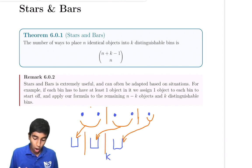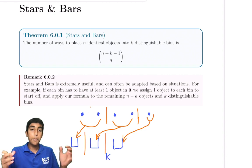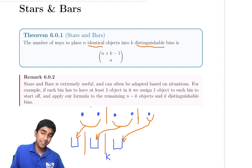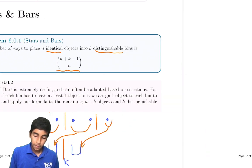Make sure to remember that the objects must be identical, and the bins must be different. So n identical objects, k distinguishable bins. There's a formula, but you don't really need to memorize it. Just understand the logic behind stars and bars.